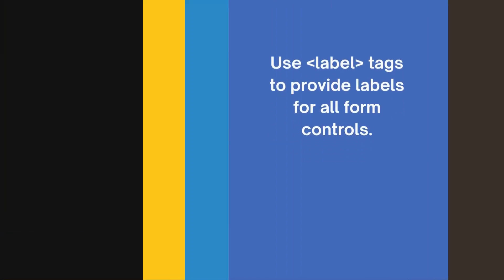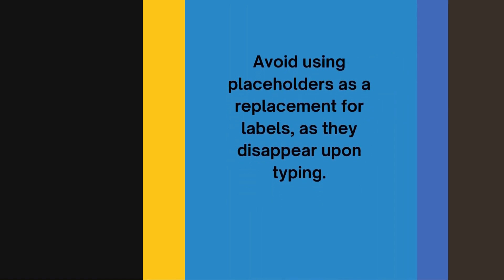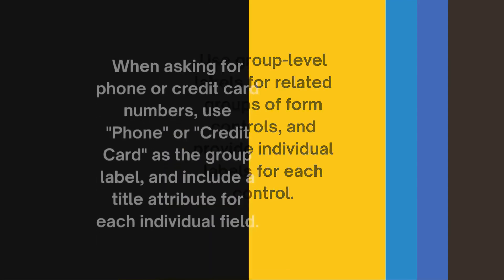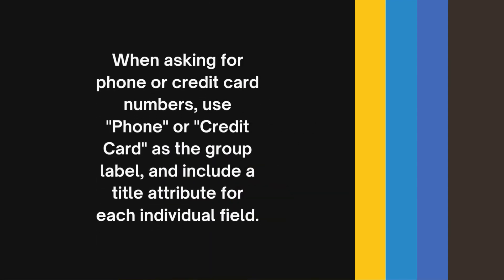But how can these issues be resolved? One should use label tags to provide labels for all form controls. One should avoid using placeholders as a replacement for labels as they disappear upon typing. One should use group level labels for related groups of form controls and provide individual labels for each control. When asking for phone or credit card numbers, one should use phone or credit card as the group label and include a title attribute for each individual field.